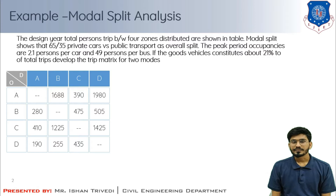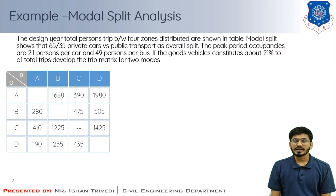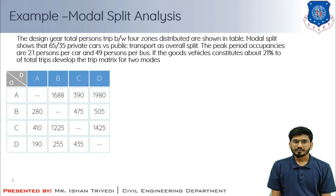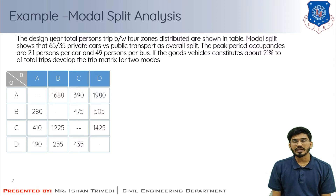Out of 100 trips, 65 are done by private car and 35 by public transportation. The occupancy is given for both modes: an average of 2.1 persons travel by car and 49 persons travel by bus. For example, if between zone A and zone B there are 500 passengers using public transport, we compute how many buses are required to transport those 500 passengers.